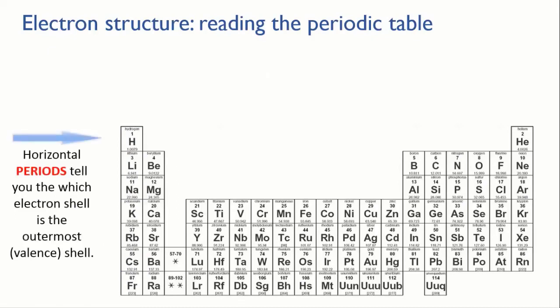So to summarize, the periods, that's the horizontal rows, tell you which electron level is the outermost for that atom. For instance, for potassium, the valence shell is the 1, 2, 3, 4th electron level because it's in the fourth period. And for lead, over here, it's the 1, 2, 3, 4, 5, 6th electron level is the valence shell.